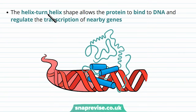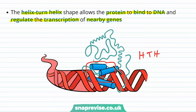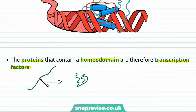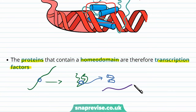The helix-turn-helix shape allows the protein to bind to DNA and it regulates the transcription of nearby genes. Other parts of DNA can bind to this helix-turn-helix structure in the homeodomain, regulating gene transcription. Because of this, any protein which contains a homeodomain is therefore a transcription factor. The homeobox gene created a protein, and the homeobox within it made the homeodomain part of that protein — this is where the helix-turn-helix structure is found, and it can either upregulate or downregulate gene transcription.